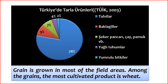Potatoes, among tuber plants, increased by 2%, reaching 5.2 million tons. Among oilseeds, soybean production decreased by 14.8% to 155,000 tons, while sunflower production increased by 5.6% to approximately 2.6 million tons. Tobacco production increased by 15% to 82,300 tons, and sugar beet production grew by 6.9% to 19 million tons.